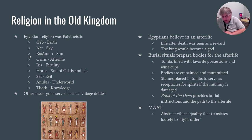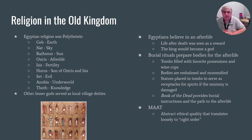Egyptian religion is polytheistic — it's based on the circle of life, and by that I really mean the circular idea of nature. Some of the most important gods include Ra, Amun, Osiris, Horus, and Anubis — each of these gods has a story or a legend that follows them. There are lesser gods as well, but these are the primary ones.